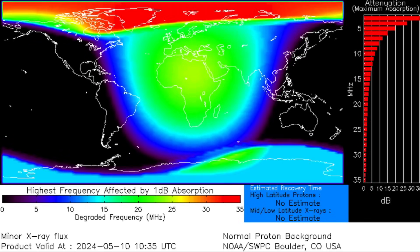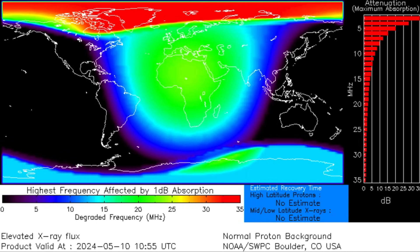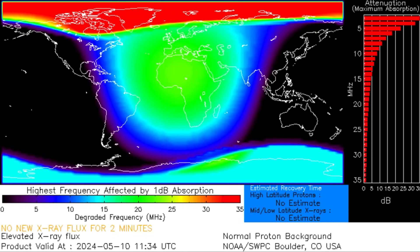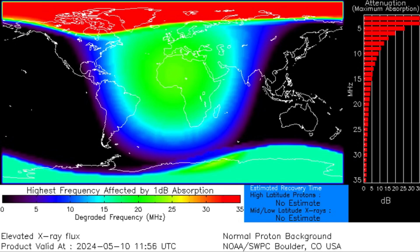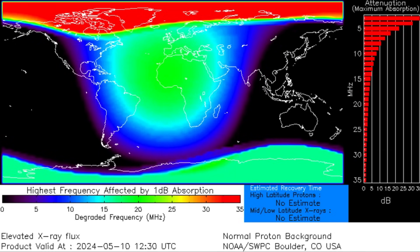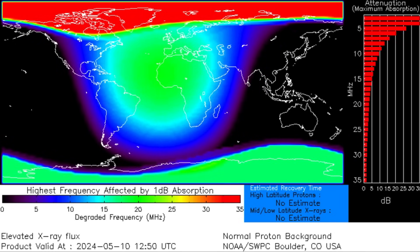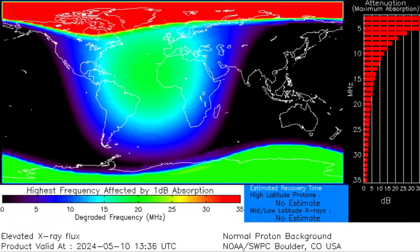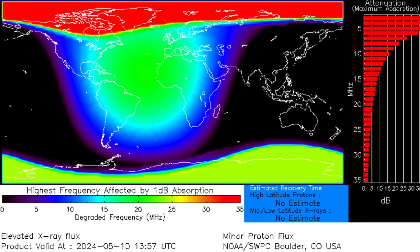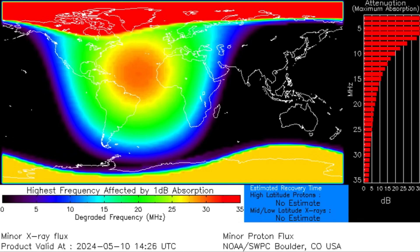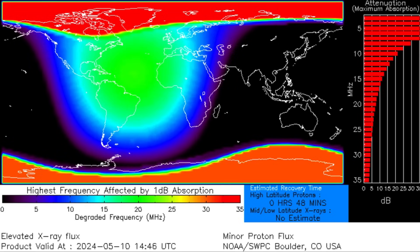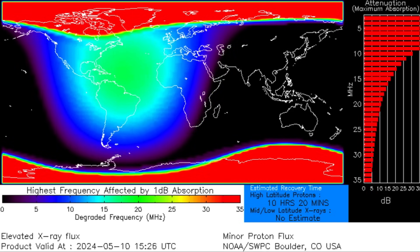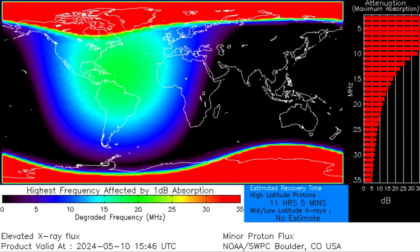So, it's showing here the highest frequency affected D-wrap. This is during the X-class event. Starts to come in here, right over the Atlantic Ocean, and boom. KP levels up to nine. Solar wind speeds up and over 700 kilometers per second.